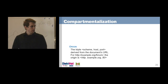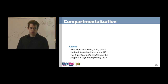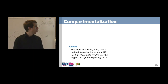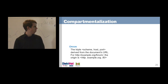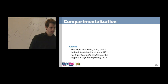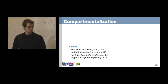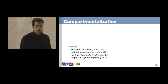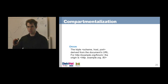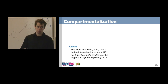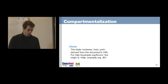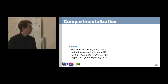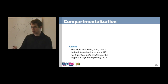An origin consists of the triple: scheme, host, and port, taken from the URL. For http://example.org, the origin is HTTP, example.org, and port 80 (implicit for HTTP). The same origin policy is based on these origins — you may know it as the thing in the browser that gives you errors when you try to do something that violates it. What it basically says is: content from one origin can interact with content from that same origin, but if it comes from another origin, it's restricted.